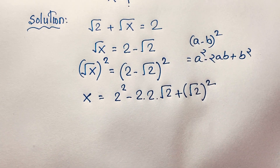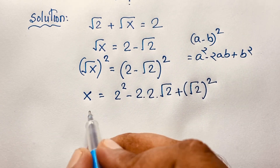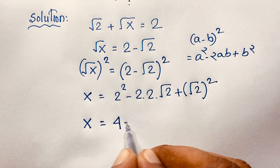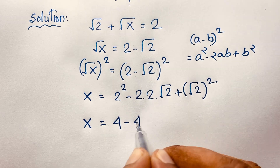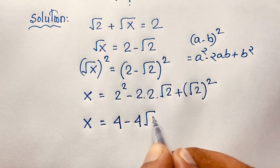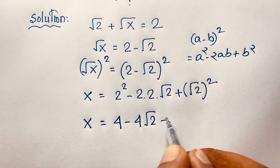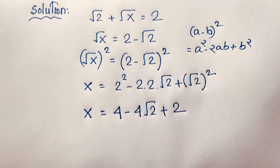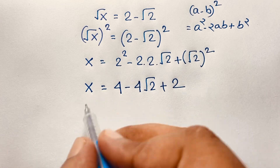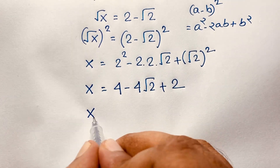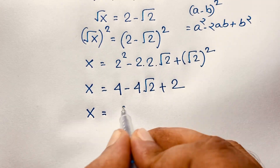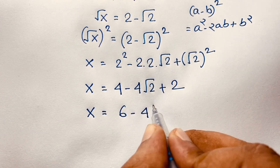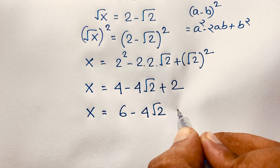Now x is equal to 4 minus 4 square root 2, and (square root 2)² gives 2. Adding both terms gives us x equals 6 minus 4 square root 2. This is our answer.